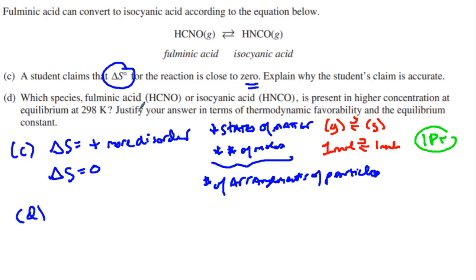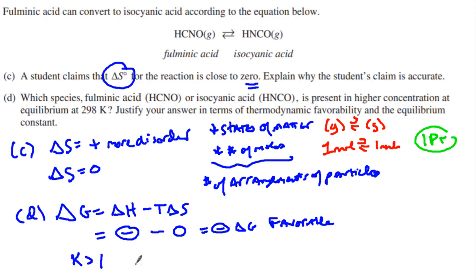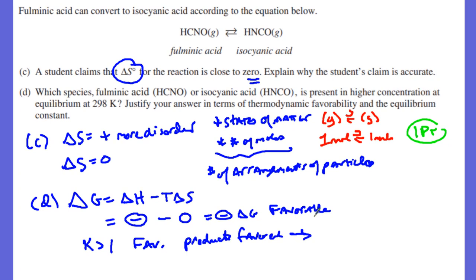That was part C, worth one point for talking about states of matter, number of moles, and no increase in the number of arrangements. Then we go to part D. It asks which species is present at a higher concentration at equilibrium, and says to justify your answer in terms of thermodynamic favorability and the equilibrium constant. Go to delta G equals delta H minus T delta S. We know delta S is very close to zero and delta H is negative, which results in a negative delta G — meaning it is favorable.